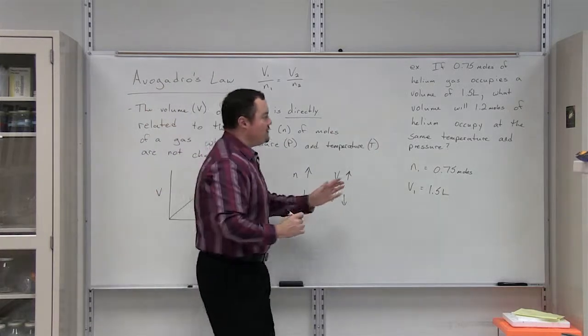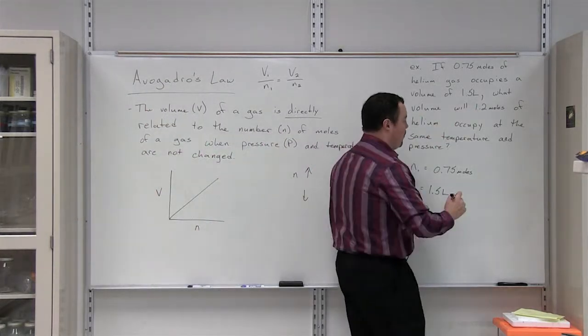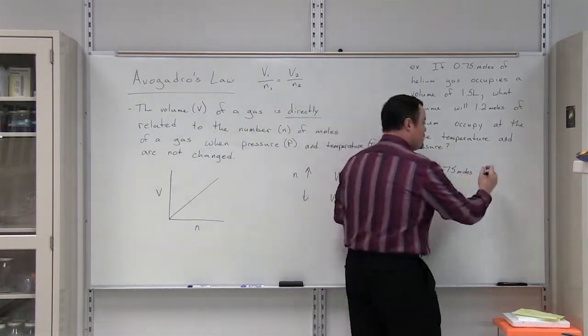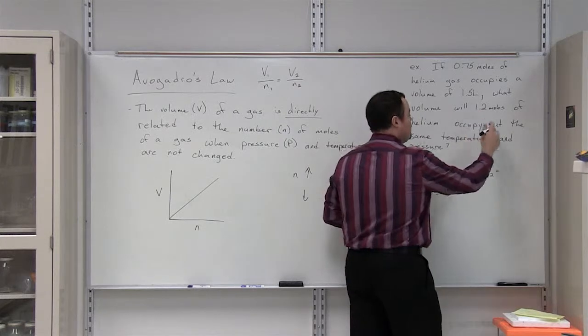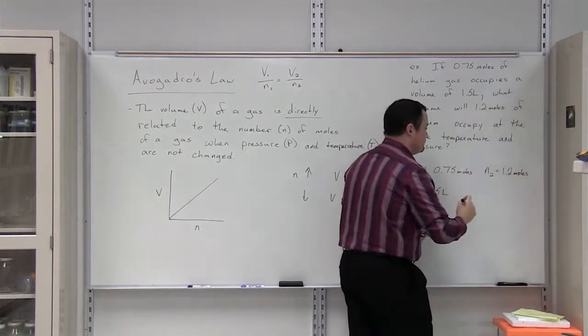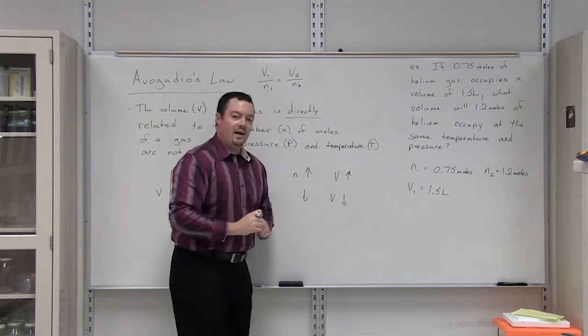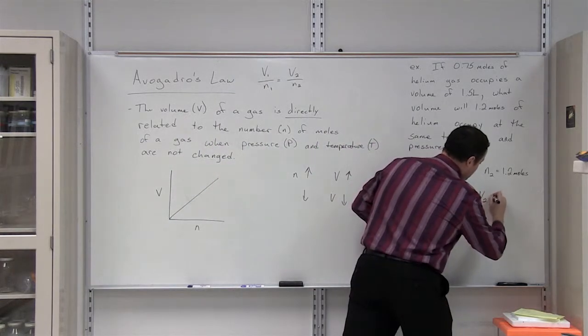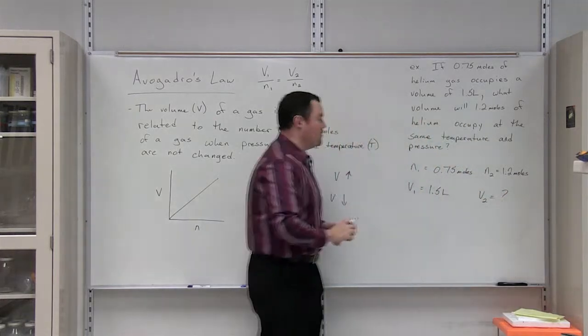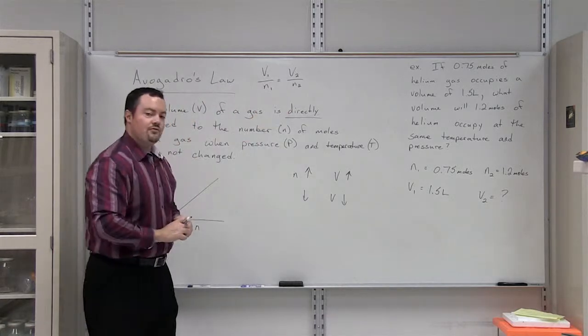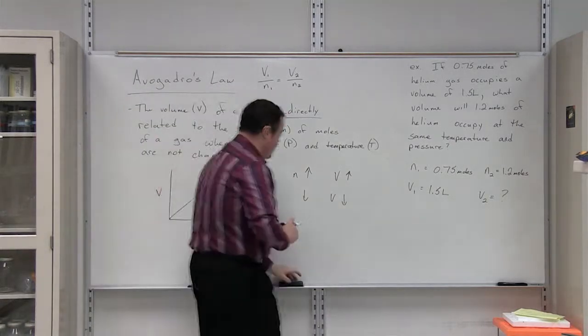And the problem tells us that we are going to increase the number of moles of gas, so this is going to be N2, our gas under condition number 2, to 1.2 moles. And then the problem asks us to solve for V2. We are going to use this formula for Avogadro's Law.